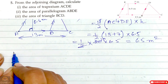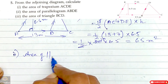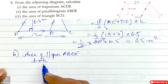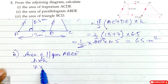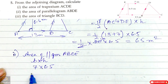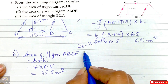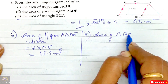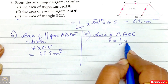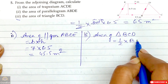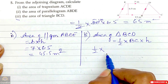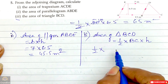Second part — area of parallelogram A, B, D, E. Formula is base into height. Base is 7 and height is 6.5, giving 45.5 meter square. Third part — area of triangle B, C, D. Formula is half into base into height. Height is 6.5. Now B, C equals A, C minus A, B. Since opposite sides of a parallelogram are equal, A, B equals D, E equals 7. So B, C equals 13 minus 7 equals 6 meter.